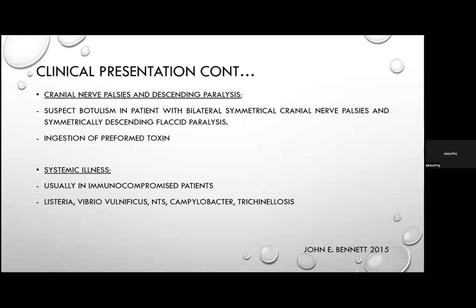In patients with systemic features, consider Listeria (especially in pregnant women and older adults, causing sepsis and meningitis), Vibrio vulnificus from raw oysters causing bullous skin lesions with diarrhoea — particularly in chronic liver disease. Consider non-typhoidal Salmonella causing bacteraemia and focal infections, especially at extremes of age, sickle cell disease, IBD, and HIV. Also consider Campylobacter and trichinellosis, a roundworm infection from undercooked pork or wild game — with an enteric phase of diarrhoea/vomiting and a parenteral phase of fever, myalgia, periorbital and facial oedema, and eosinophilia.